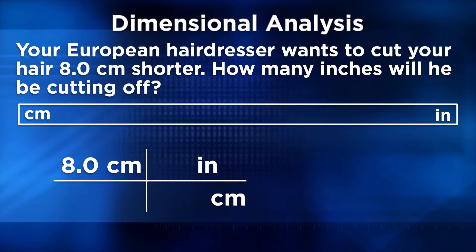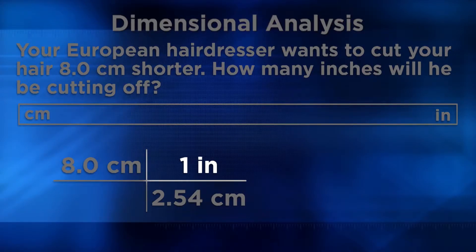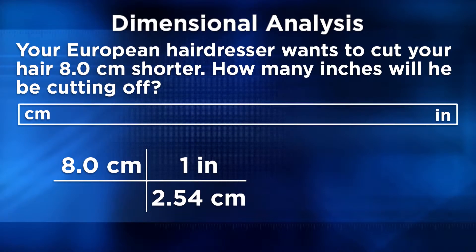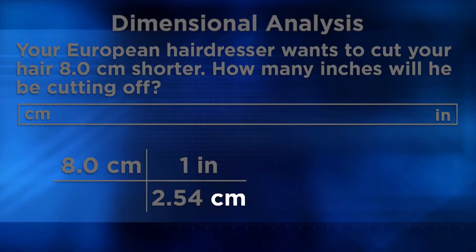The unit that you started with — centimeters — will now become the denominator of the second column. The numerator of the second column will be the target unit, the unit that you're converting to. In this case, that's inches. In this way, we're letting the units guide the conversion. For this particular problem, we'll choose the conversion factor that has 1 inch in the numerator and 2.54 centimeters in the denominator, because centimeters became the denominator of the second column and we needed to solve for inches.